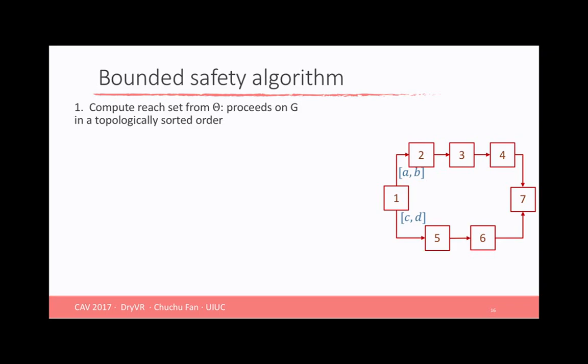The algorithm for the whole transition graph is going to proceed according to a topologically sorted order. That is, from the initial vertex 1, we are going to compute the reach set of 1. Then for the successor of 1, that's vertex 2, because we are going to transit from 1 to 2 within time A to B, so we will restrict the reach set of 1 to A to B and use this restricted set as an initial set for vertex 2. And do the same thing, similar thing for another successor of 1, that's vertex 5. Next, we move to the next vertex 2 and do similar stuff and so on and so forth until you reach the terminal vertex.